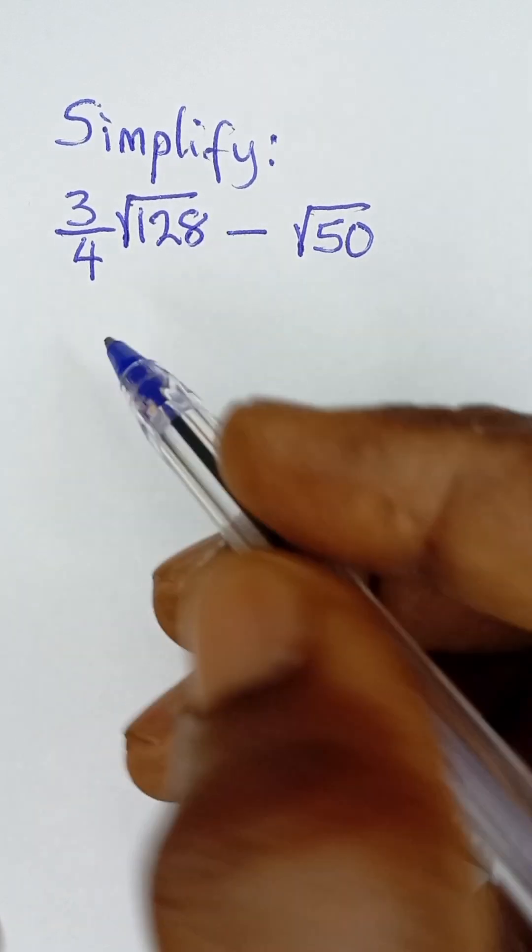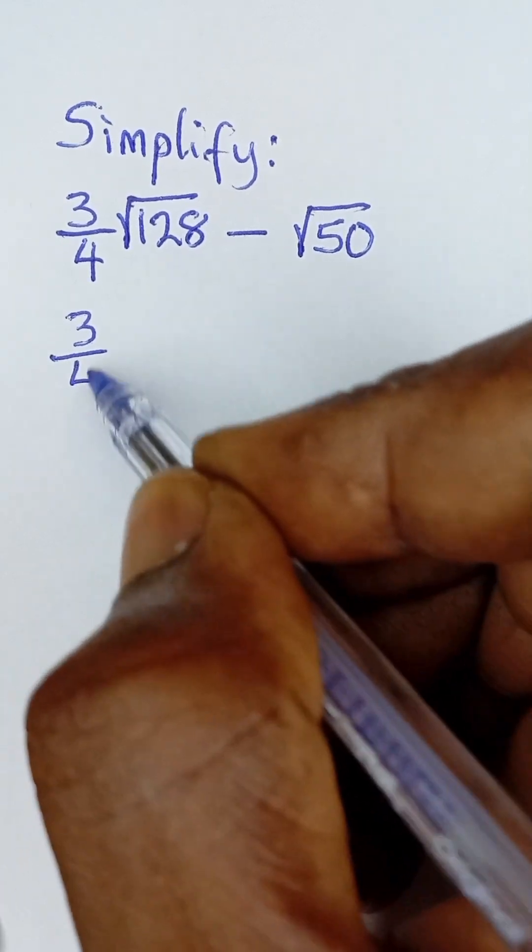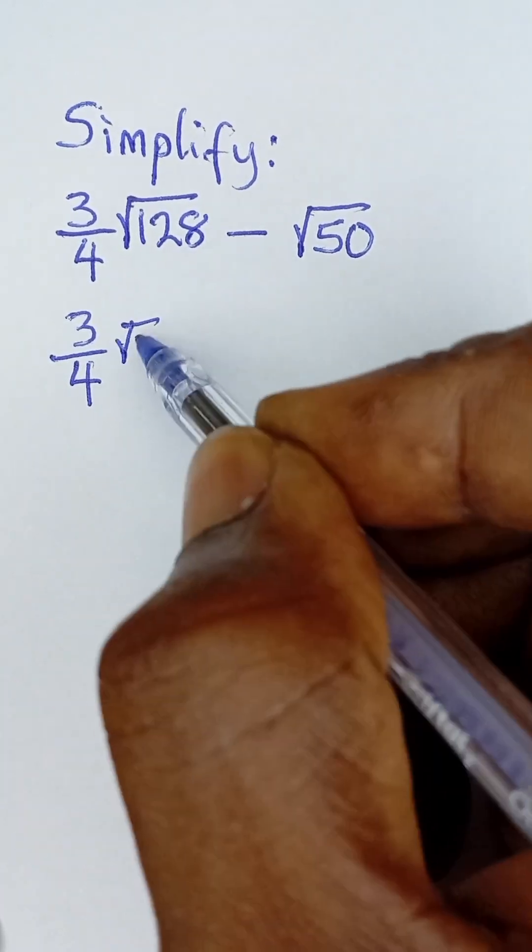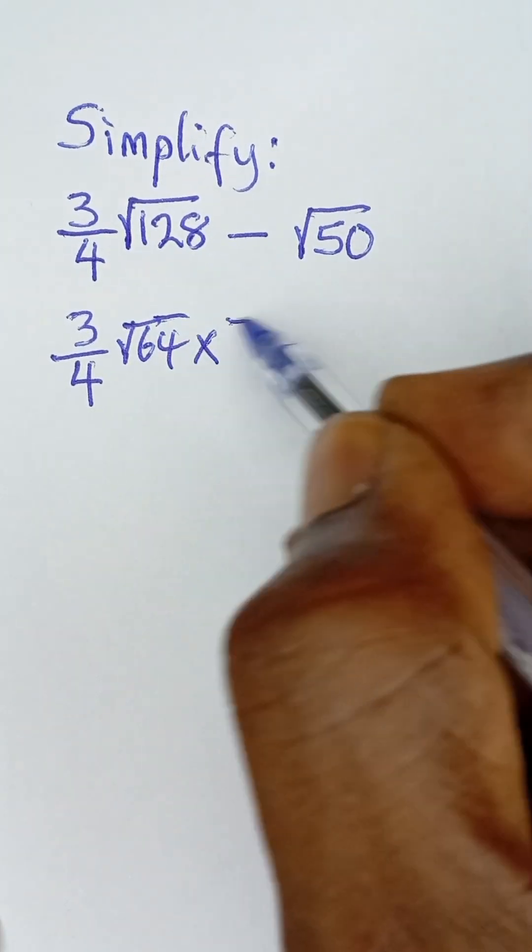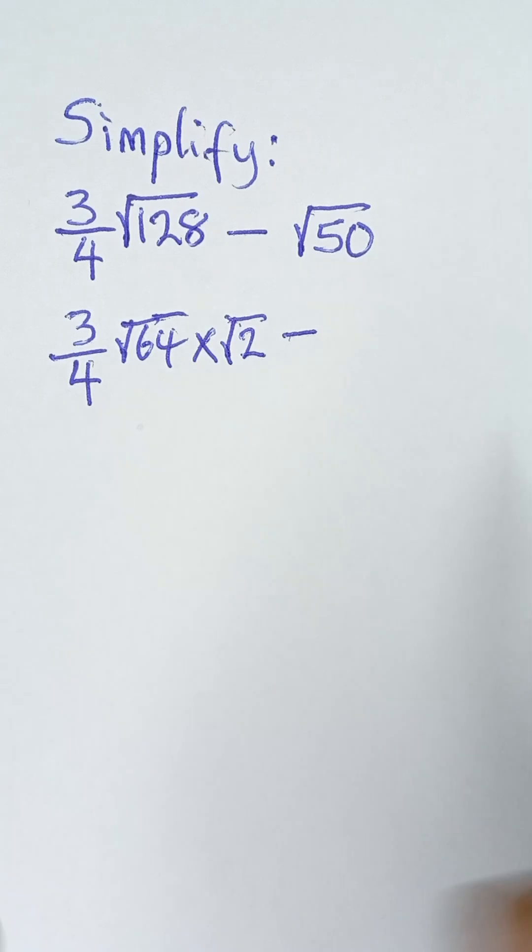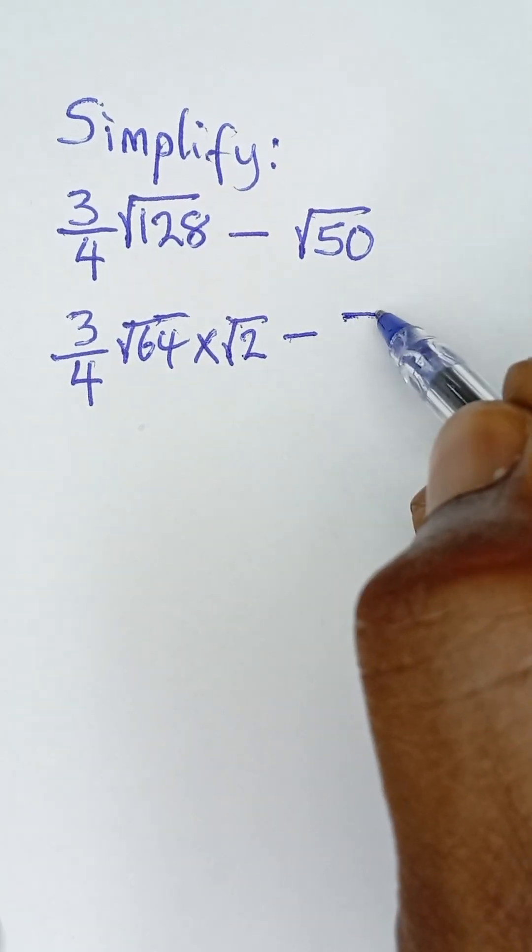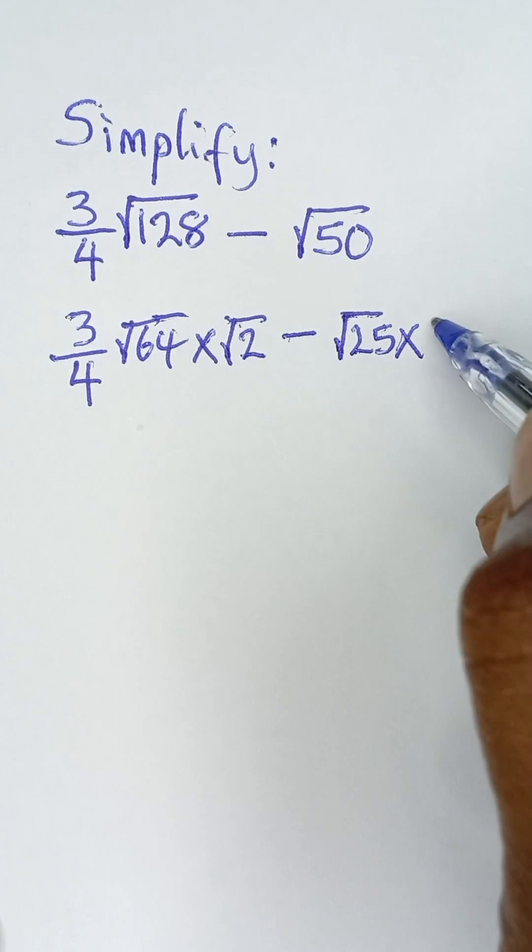128 can be broken down to 64 and 2, because 64 is a perfect square. So root 64 multiplied by root 2, and then minus root 50 can be broken down to root 25, because 25 is a perfect square, so root 25 and then root 2 as well.